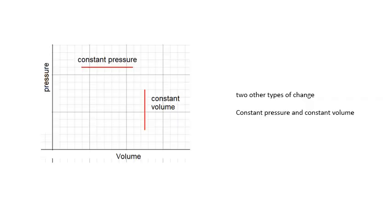Another couple of changes which might occur: you could have the gas expanding at constant pressure, or you could have a change in pressure at constant volume. And if that happens, that's what they would look like on a pV graph.